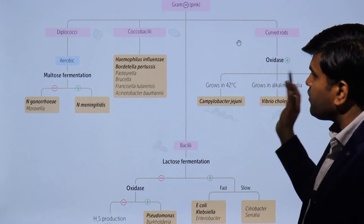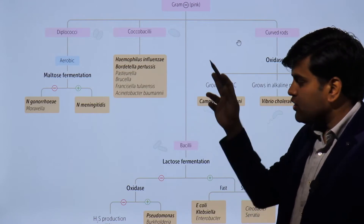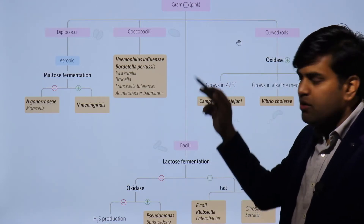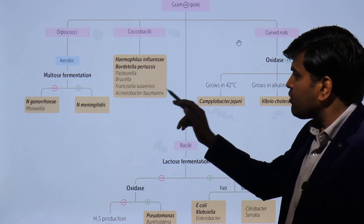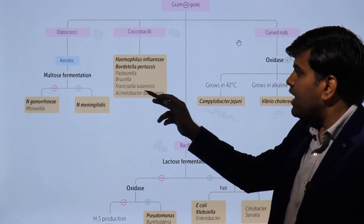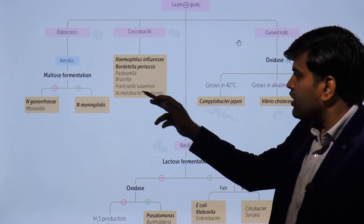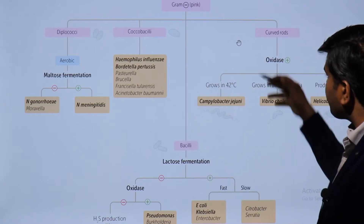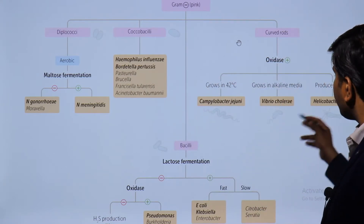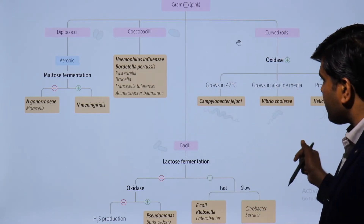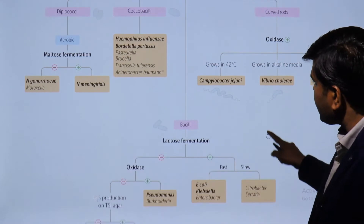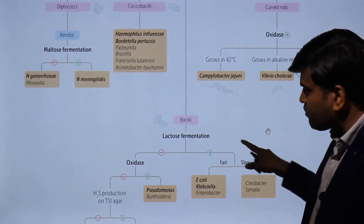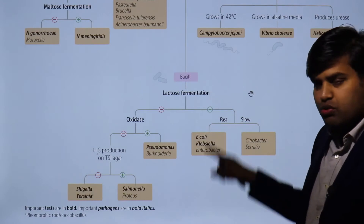In the bacilli group, it has been divided into three: coccobacilli, true bacilli, and curved rods. In the coccobacilli group we have Haemophilus influenzae, Acinetobacter, and the ELLA group — Bordetella, Pasteurella, Brucella, and Francisella. The curved rods include Campylobacter jejuni, Vibrio cholerae, and Helicobacter pylori — all oxidase positive, differentiated on the basis of their specific characteristics.